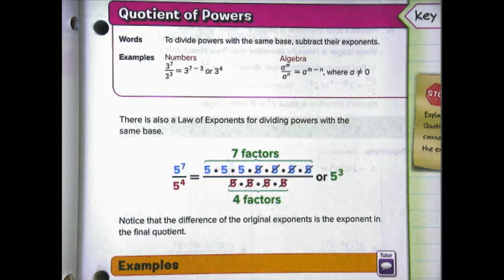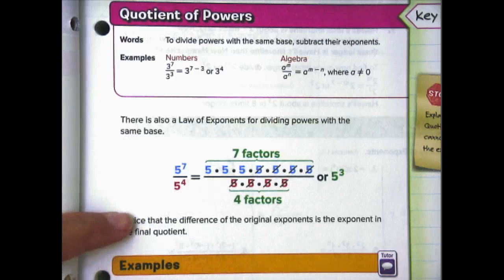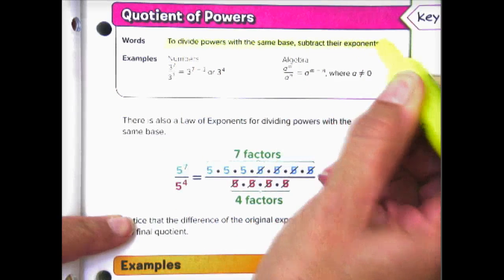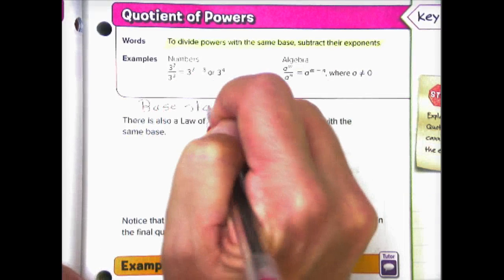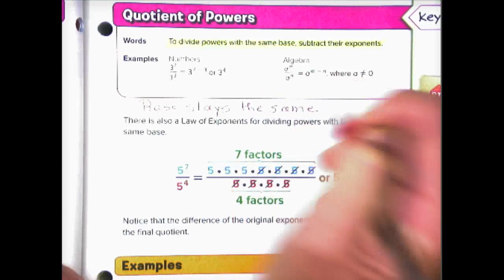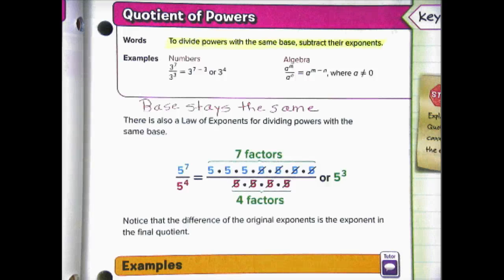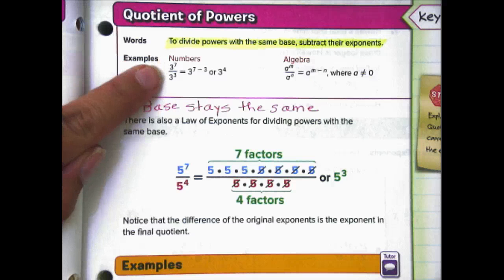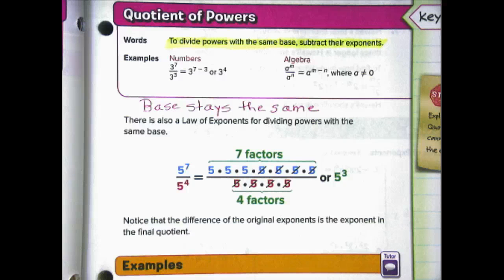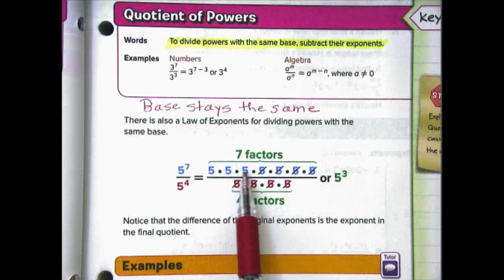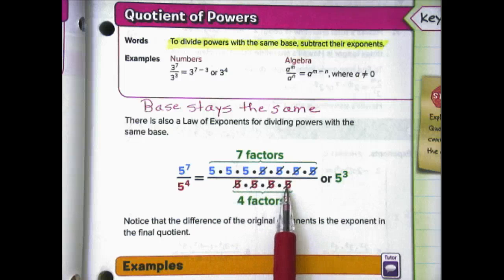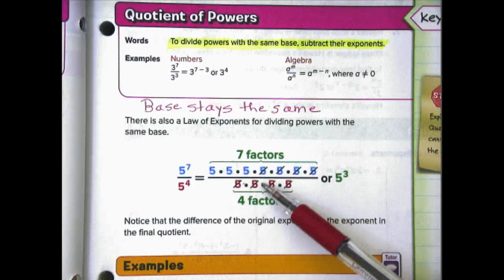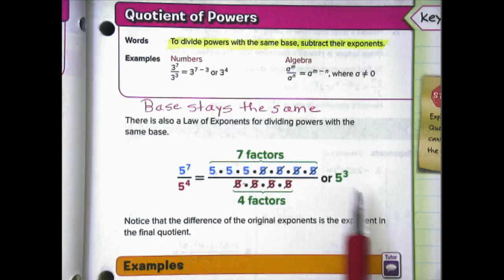Let's move to page 25: the quotient of powers. To divide powers with the same base, subtract their exponents — the base stays the same. This only works when the base is the same. In the example, 3 to the seventh divided by 3 to the third, we subtract and get 3 to the fourth. To show how it works: 5 to the seventh divided by 5 to the fourth — after canceling common factors, you're left with 3 fives, so 5 to the third. The easiest way is just to subtract the exponents.